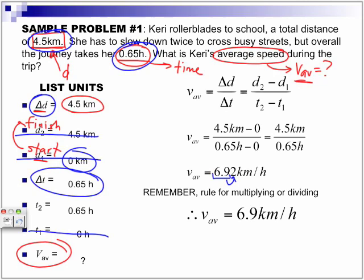And of course, anytime you solve a word problem, always end it with a therefore statement. Therefore, Keri's average speed during the trip is 6.9 kilometers per hour. Please don't forget units. Please don't forget your final statement.